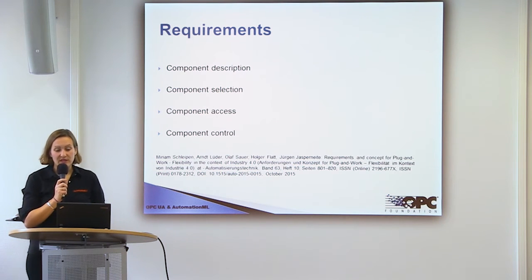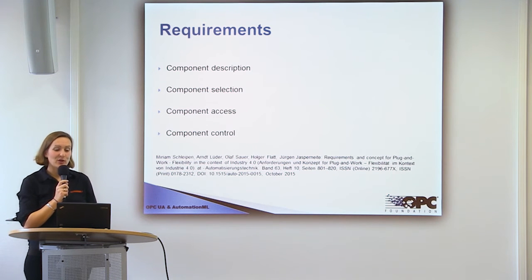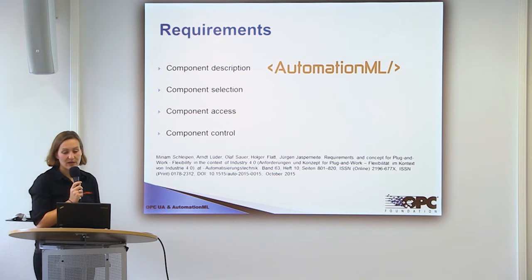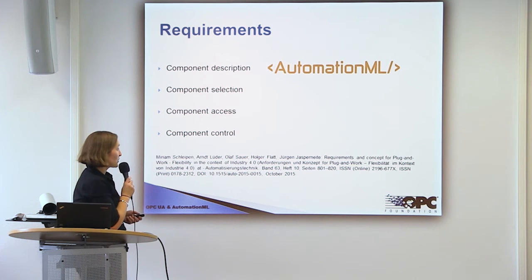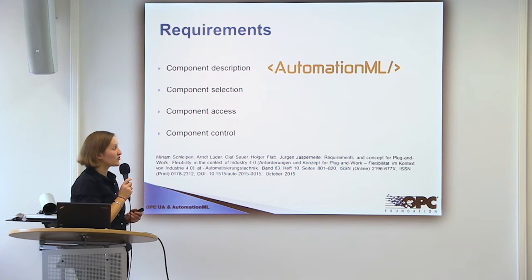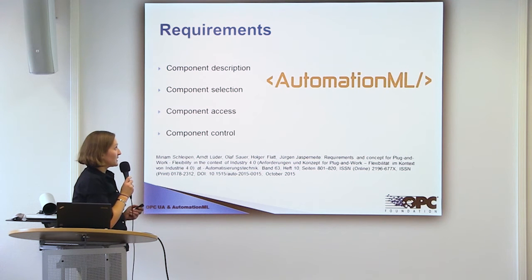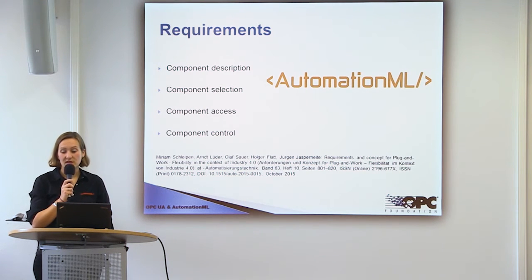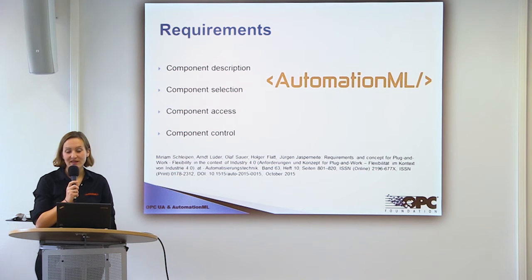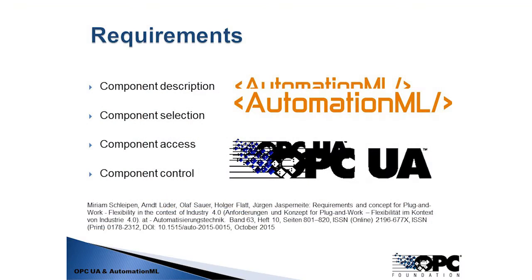For this future vision we need different things. On the one hand we need a component description, where AutomationML can be used. Not only the description but also requirements and other things result in the component selection process, meaning you can select which component best fits your production process. However, AutomationML is a data exchange format and is not designed for communication. It is only descriptive, and we need the possibility not only to describe what to communicate but also how.